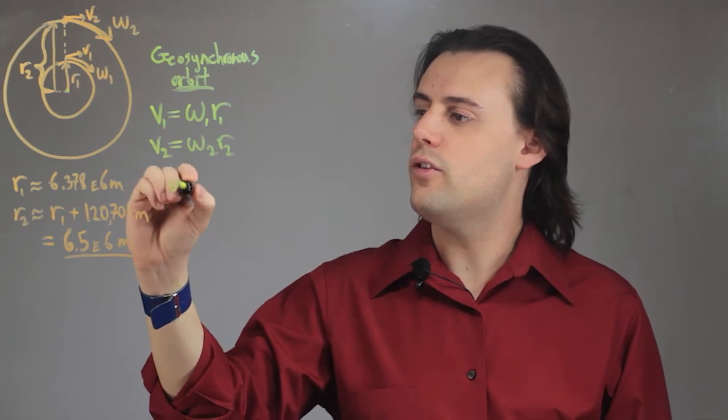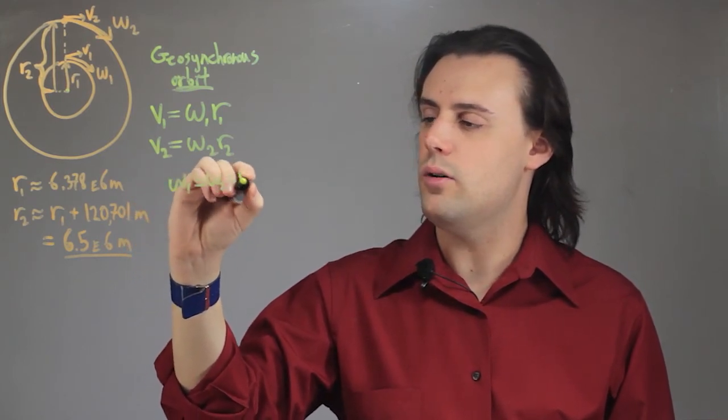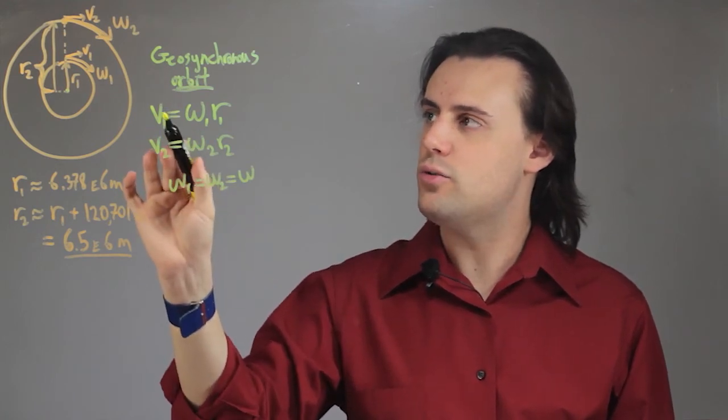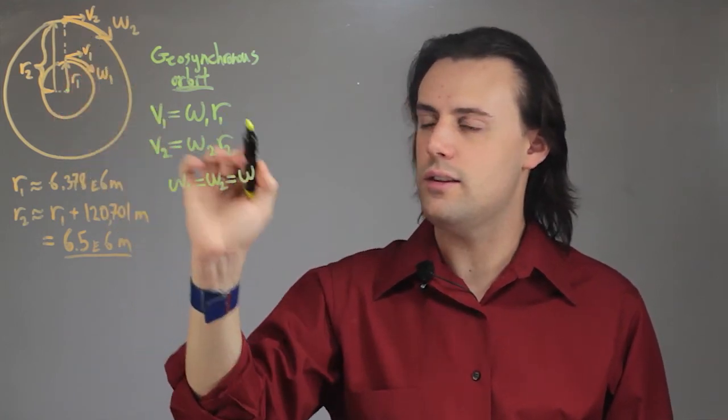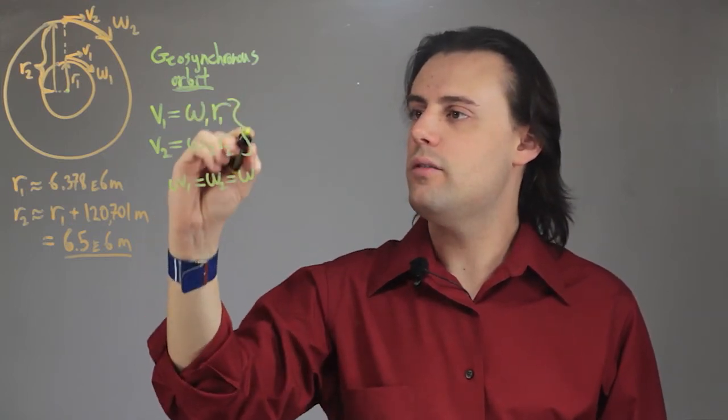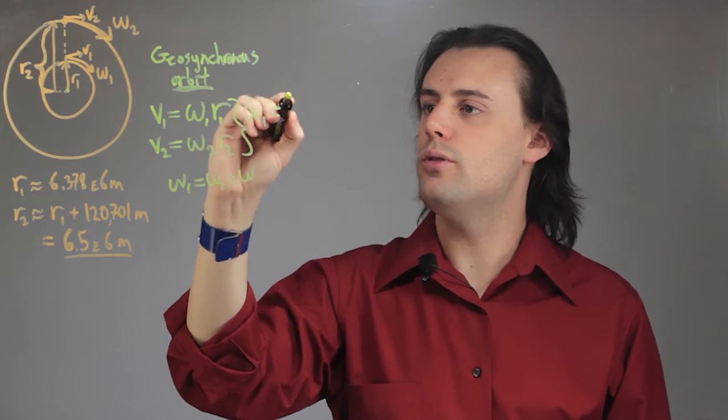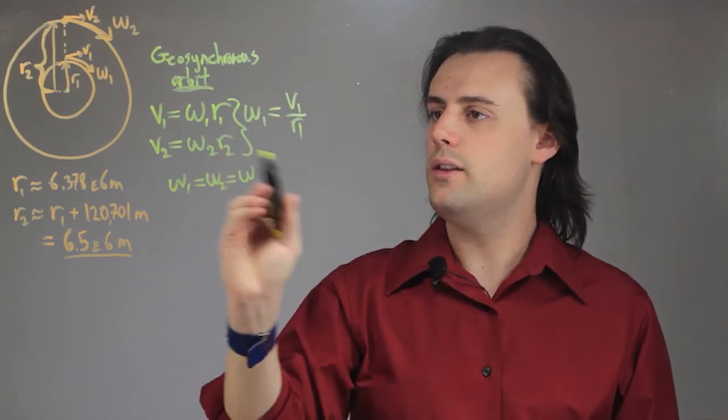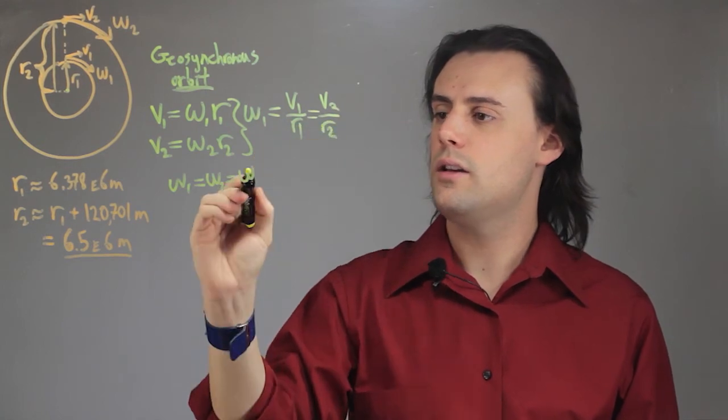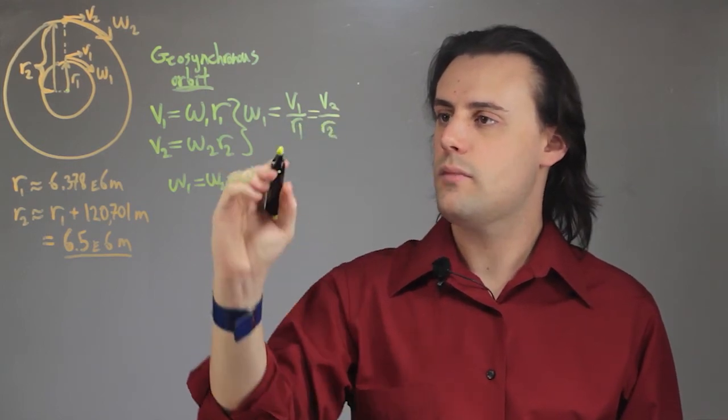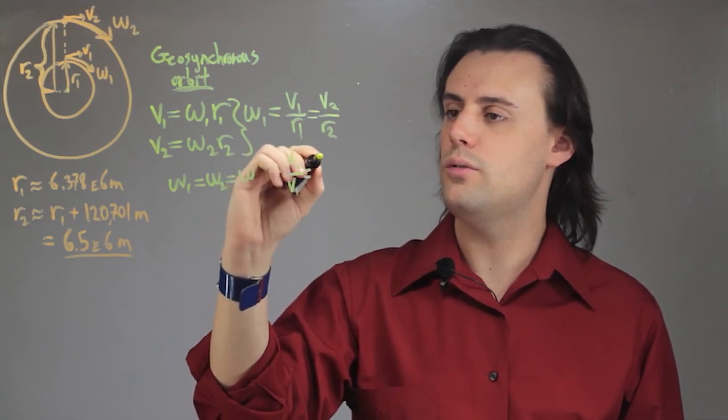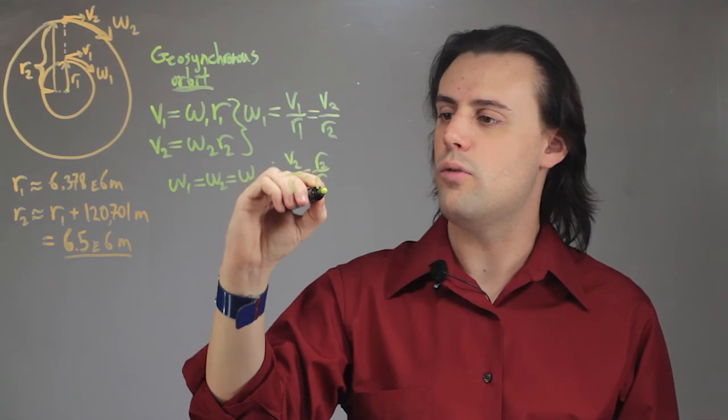If omega 1 is equal to omega 2 and we just call that omega, then we can form a relationship between these two velocities and these two distances. We have omega is equal to v1 divided by r1 and this will be equal to v2 over r2. Therefore, the ratio v2 over v1 is equal to the ratio r2 over r1.